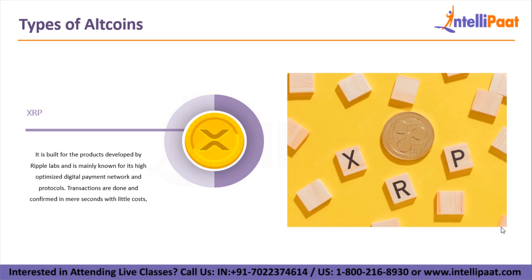Next we'll talk about XRP. It is also a kind of altcoin built for the products developed by Ripple Labs and is mainly known for its highly optimized digital payment network and protocols. It gives a major advantage over Bitcoin as its transactions are done and confirmed in mere seconds with little cost, while Bitcoin transaction confirmations take many minutes with high transaction costs.